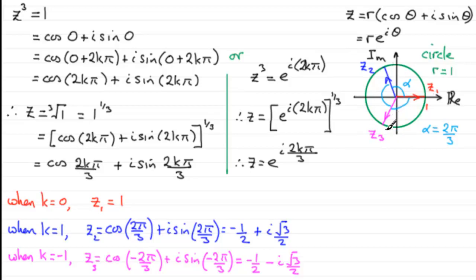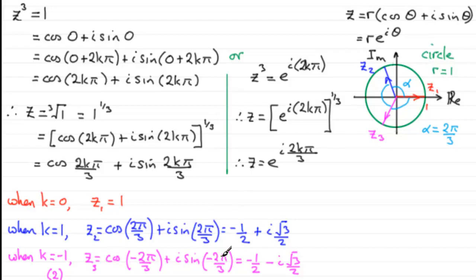To get these roots I took k equals 0, 1, and −1. I could have taken k equals 0, 1, and 2, and it would have given the same result — k equals 2 gives cos(4π/3) + i·sin(4π/3), which is the same point — but since the argument must satisfy −π < arg ≤ π, the value 4π/3 is out of range.